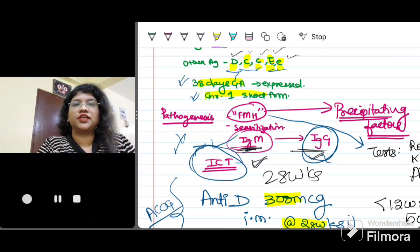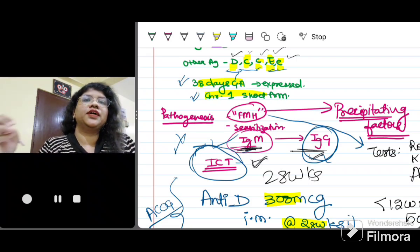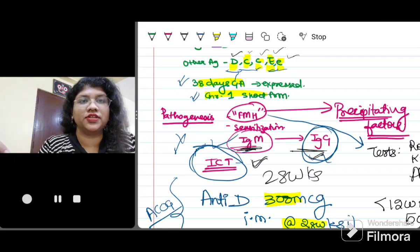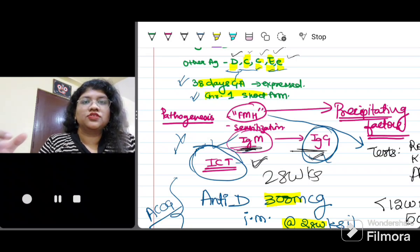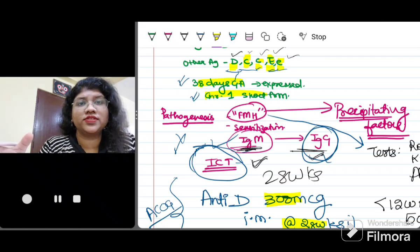So when these precipitating factors are there and there is fetomaternal hemorrhage, when the fetal blood enters into the maternal circulation, there is sensitization. What does sensitization mean? When the fetal RBCs which have this D antigen enter the maternal circulation, the maternal immune system reacts against it and they start producing antibodies.